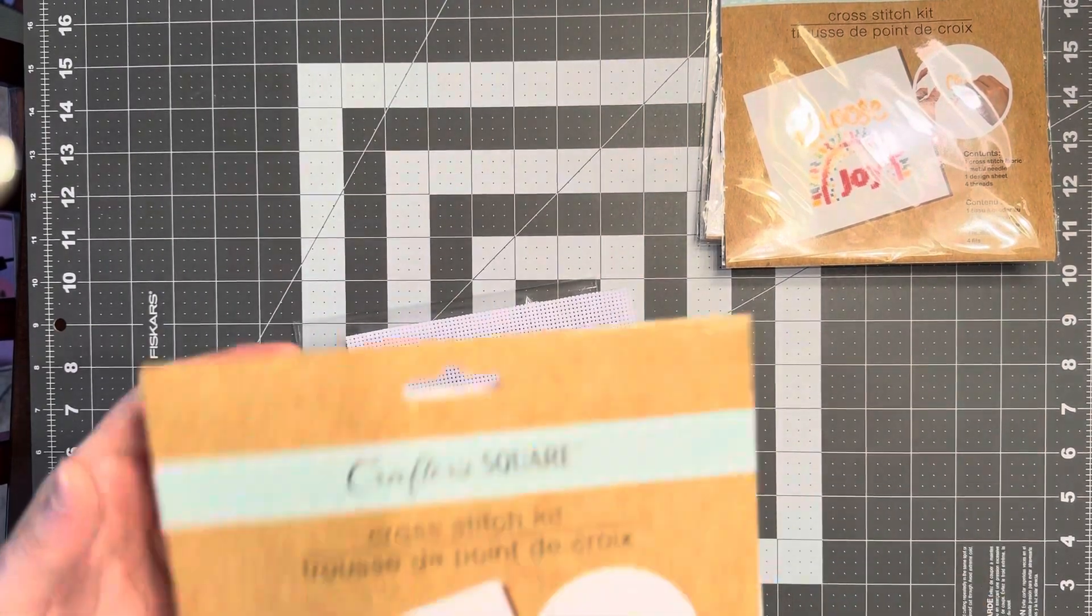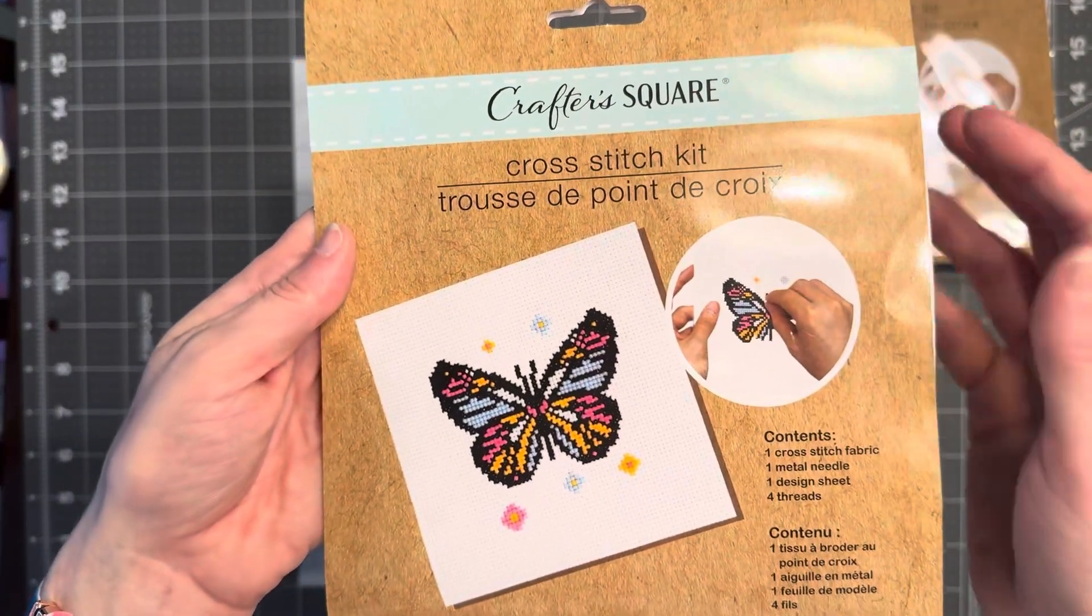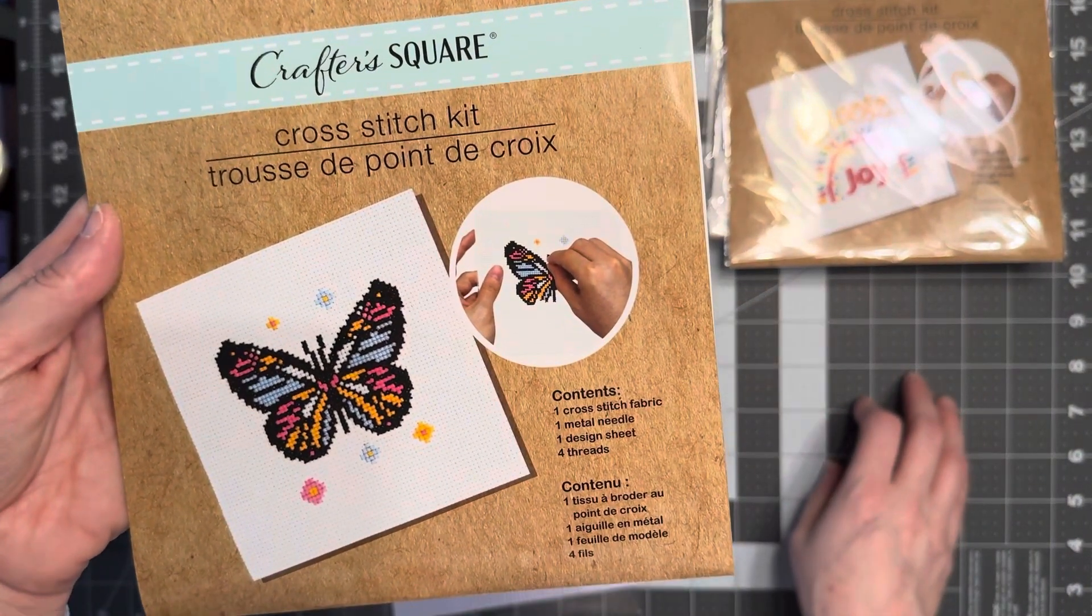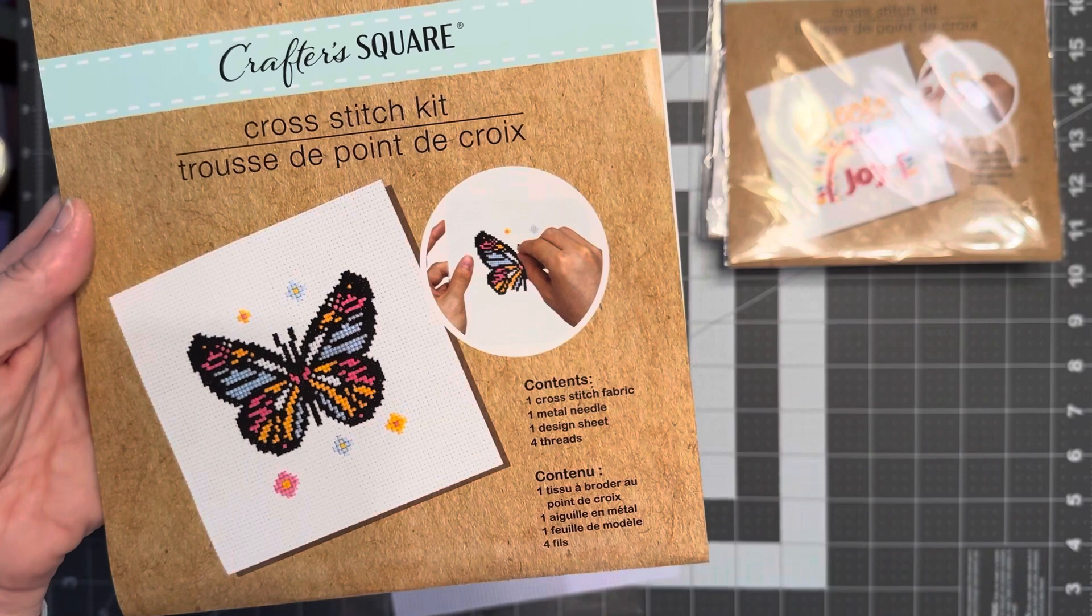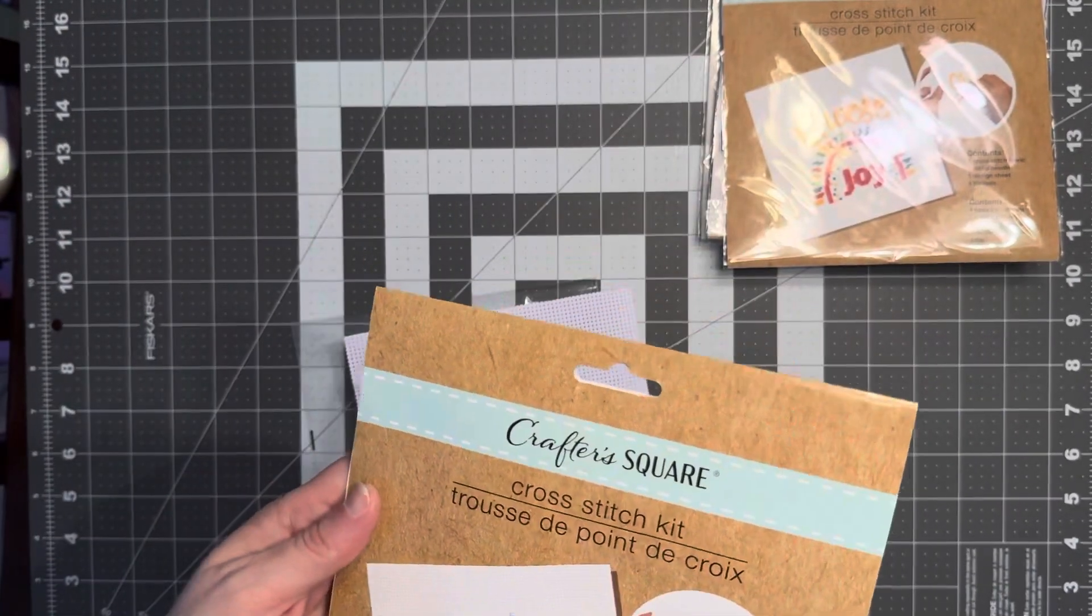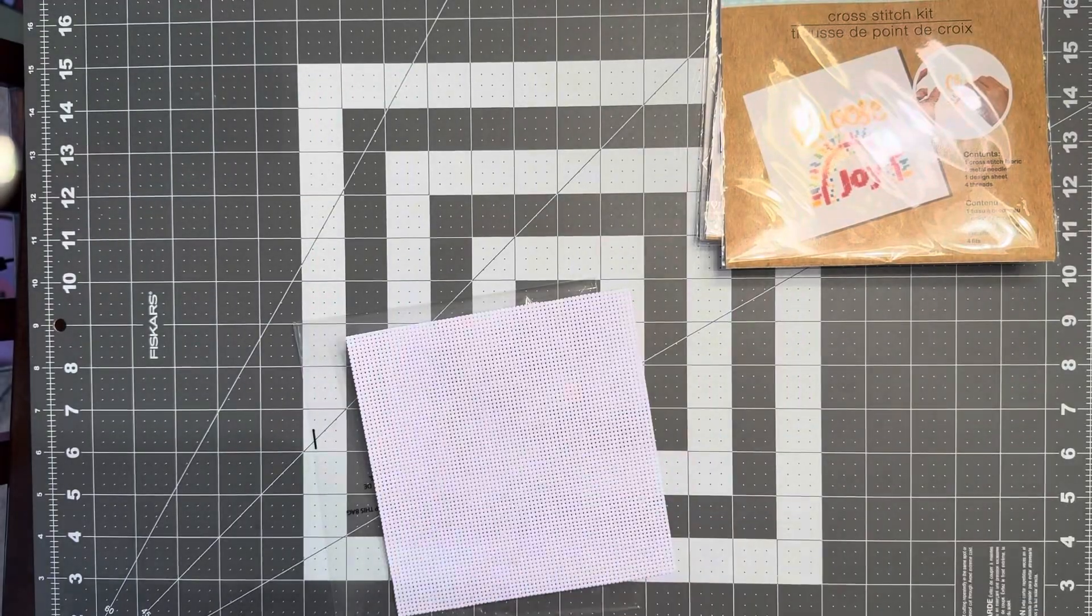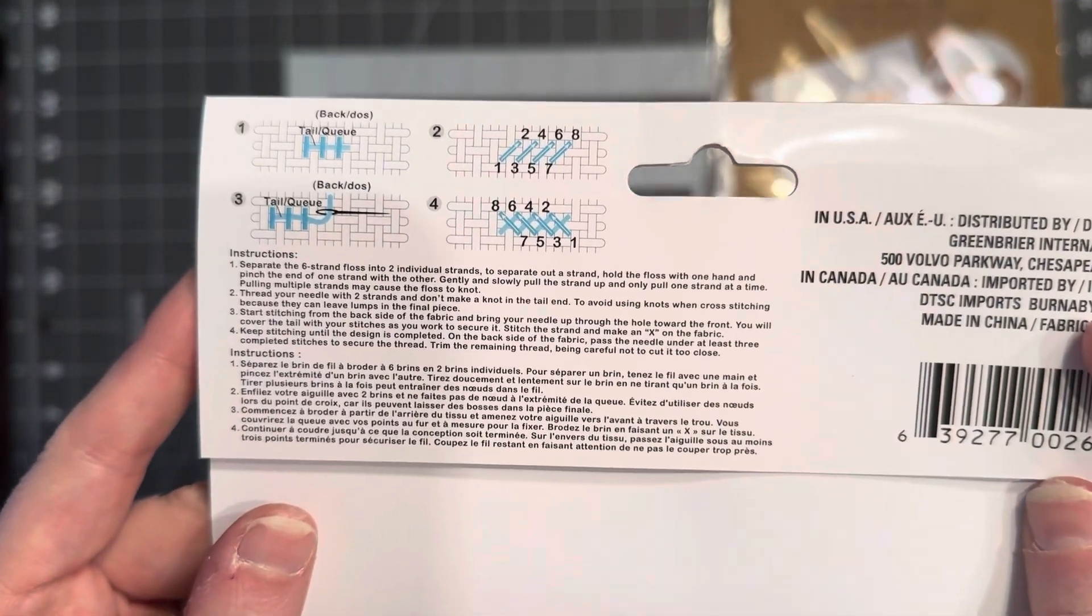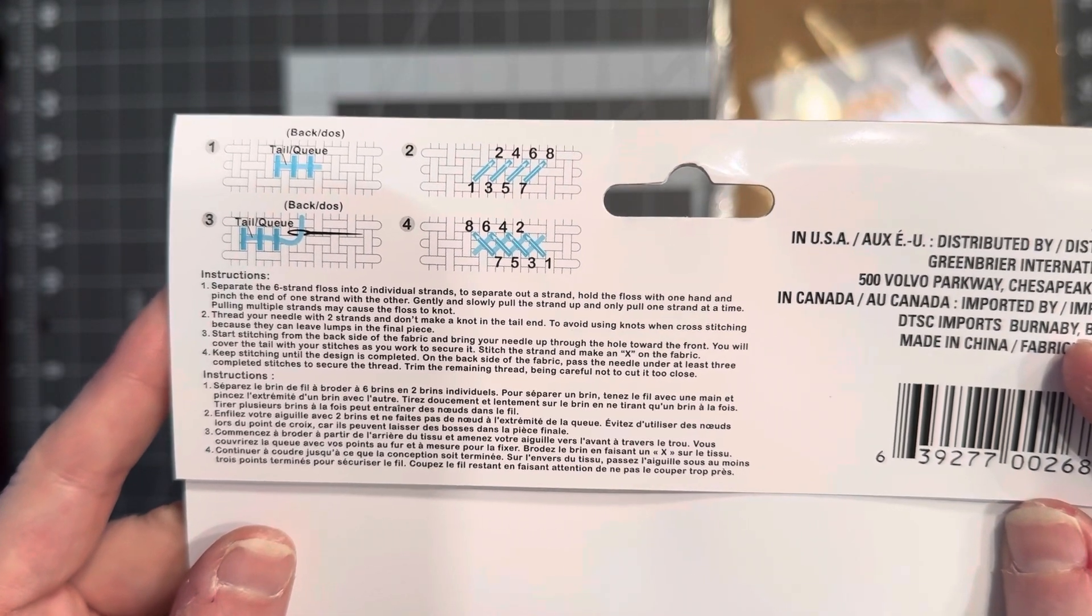So I figured I would show you the content of the butterfly kit. All of these kits come with one cross stitch fabric, one metal needle, one design sheet, and the four threads.